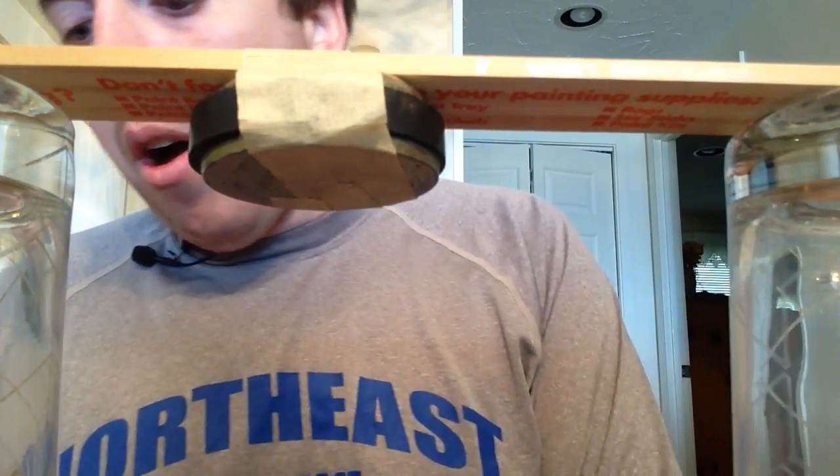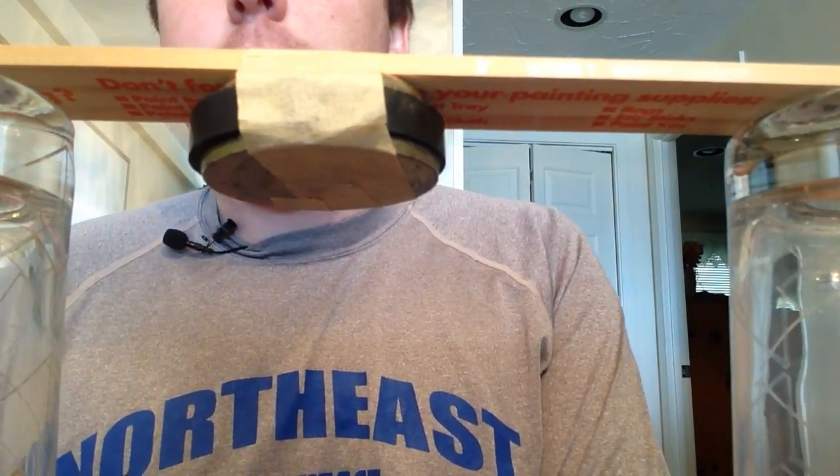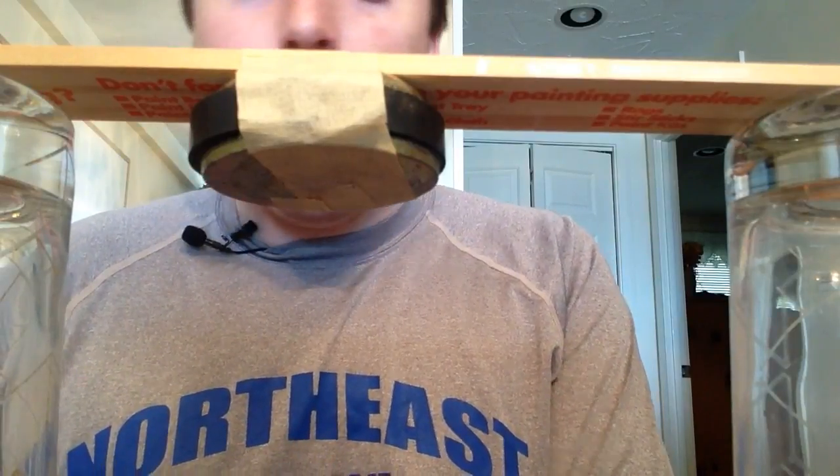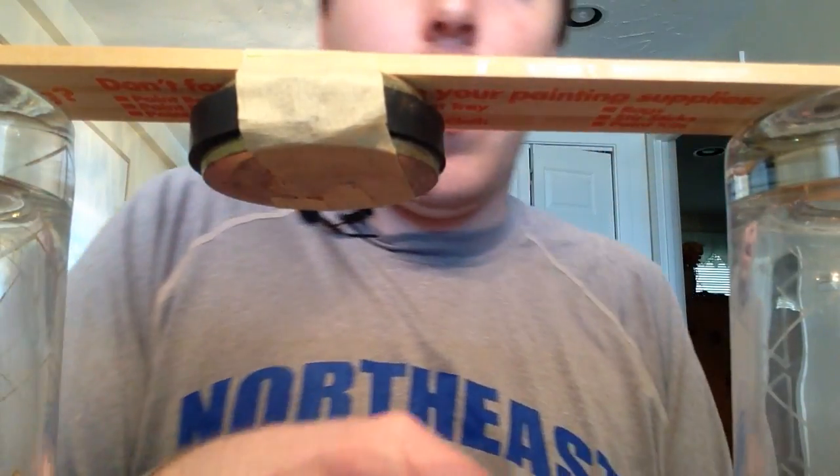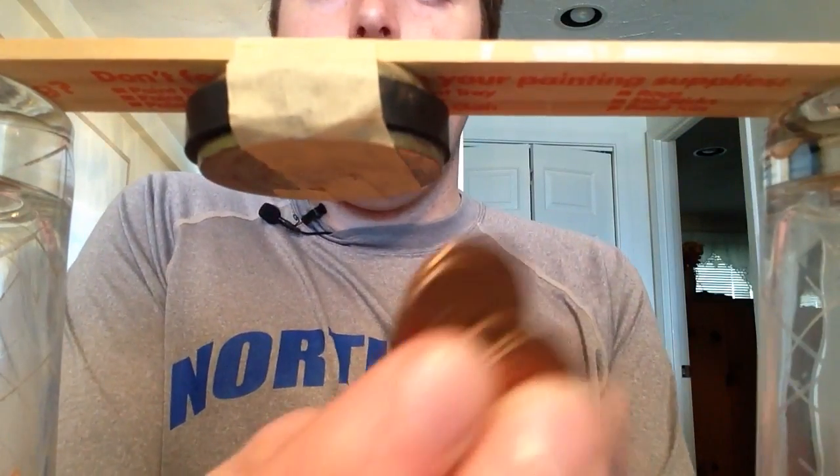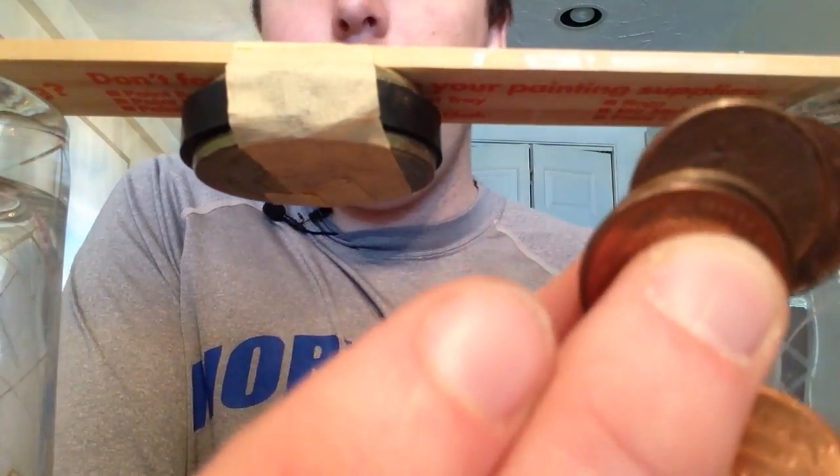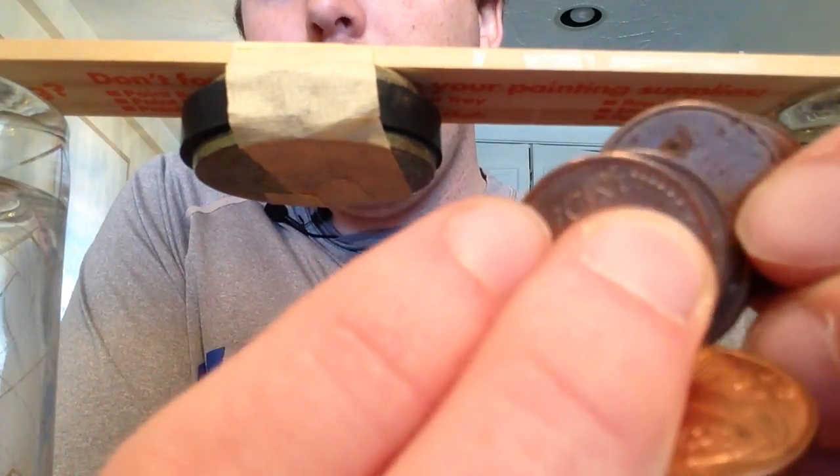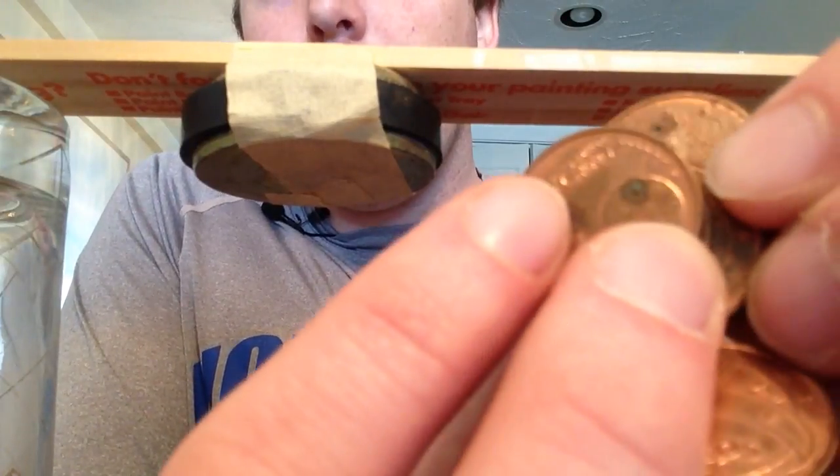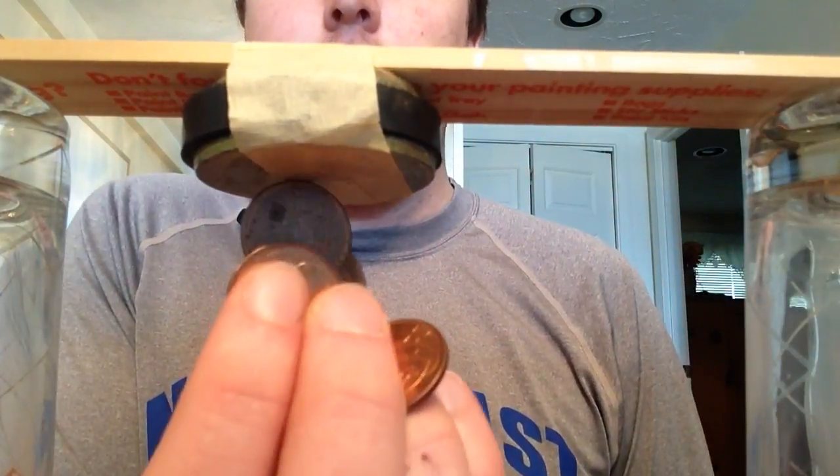Other fun magnetic coins that are out there are the one, two, and five euro cent coins. Now I've got a bunch of those that you've seen on the channel. They look something like this. In appearance they would not look magnetic because they have a copper color to them.